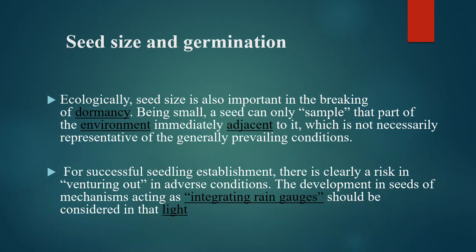Being small, a seed can only sample that part of the environment immediately adjacent to it, which is not necessarily representative of the generally prevailing conditions. For successful seedling establishment, there is clearly a risk in venturing out in adverse conditions. The development in seeds of mechanisms acting as integrating rain gauges should be considered in this light.